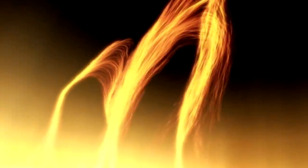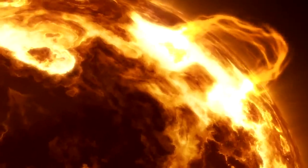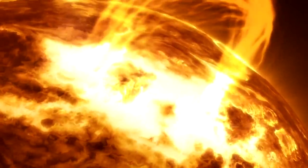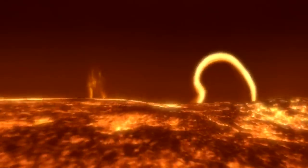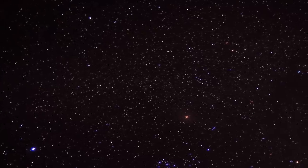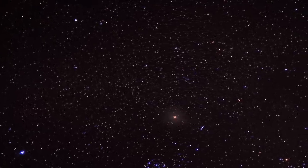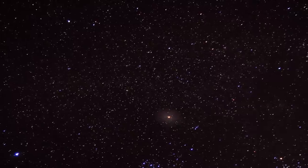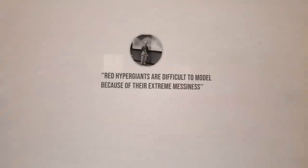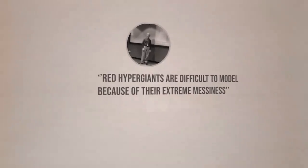For instance, according to research, the radius of UY Scuti may be up to 192 solar radii greater or smaller than previously thought. If the lowermost value is accurate, other stars would be larger than UY Scuti by about 30 times its smallest estimated size. Red hypergiants are difficult to model because of their extreme messiness, according to Massey. The surfaces are always moving.